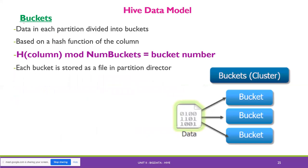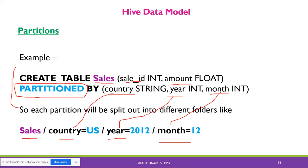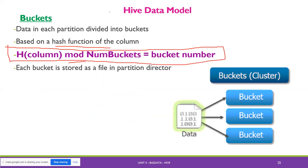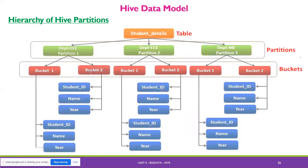The last model is bucket. Data in each partition is divided into buckets based on a hash function of the column. The formula is: h(column) mod (number of buckets) = bucket number. Each bucket is stored as a file in the partition directory. The buckets are defined using this hash function, which helps find the particular value of that bucket.